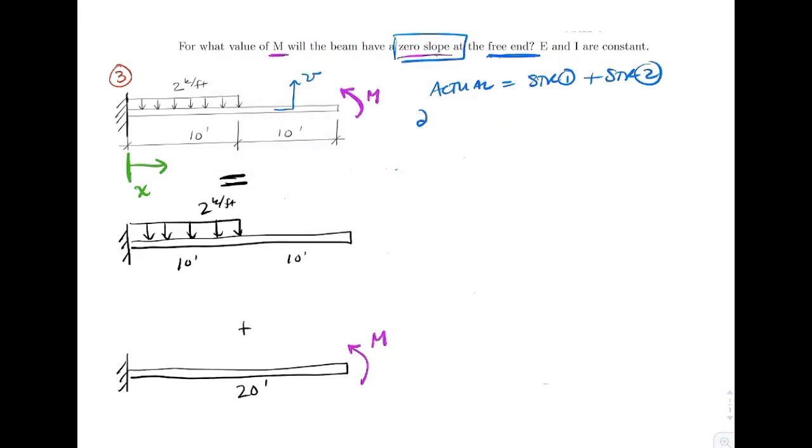So this would tell me that the slope, which is the first derivative of v with respect to x in the actual at 20, has to equal the slope in structure one evaluated at 20, plus the slope in structure two evaluated at 20.